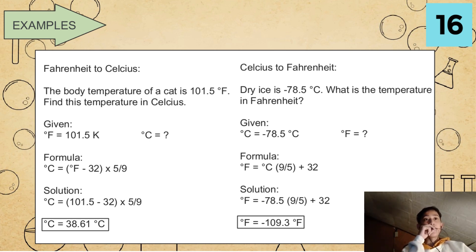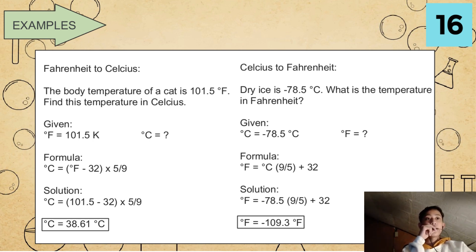Celsius to Fahrenheit: dry ice is negative 78.5 degrees Celsius. What is the temperature in Fahrenheit? Given: degrees Celsius equals negative 78.5 degrees Celsius. We are finding Fahrenheit. Using the formula degrees Fahrenheit equals degrees Celsius times 9 over 5 plus 32, we substitute: degrees Fahrenheit equals negative 78.5 times 9 over 5 plus 32. Our final answer is degrees Fahrenheit equals negative 109.3 Fahrenheit.